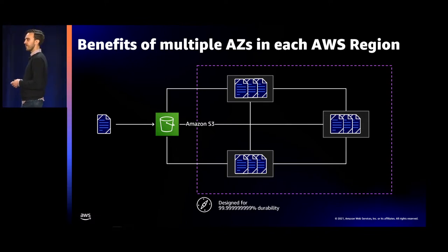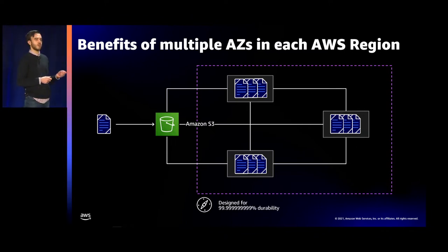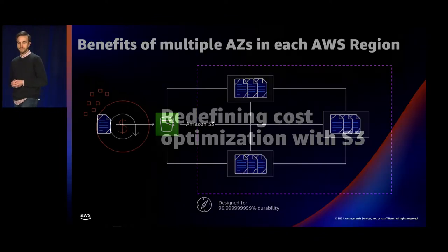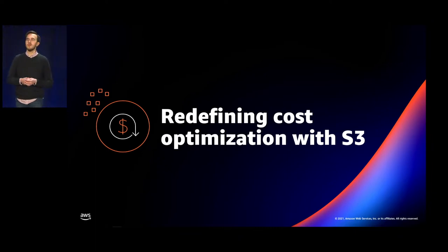Furthermore, these availability zones are never in the same physical building — they're in separate facilities separated by many kilometers. This kind of built-in redundancy is really transformational to businesses that are used to operating in a single on-premises data center, or perhaps a second site for disaster recovery. Building on top of S3's industry-leading scalability, availability, security, and performance, I'm really excited about today's session.